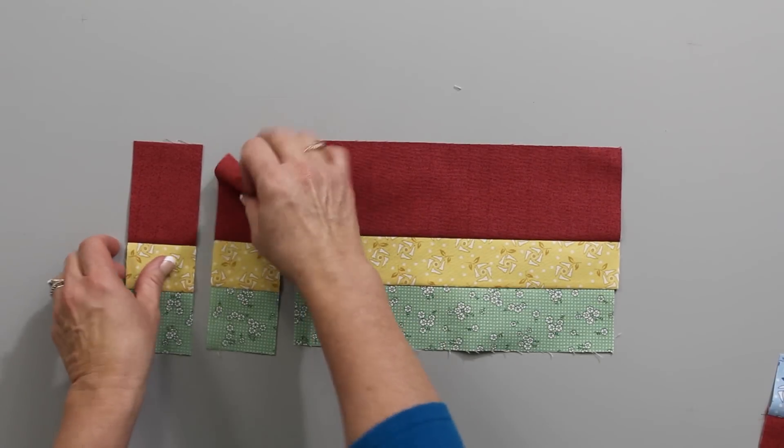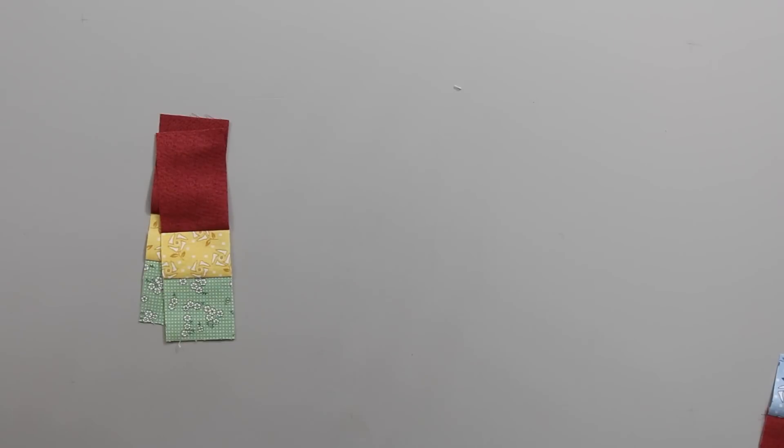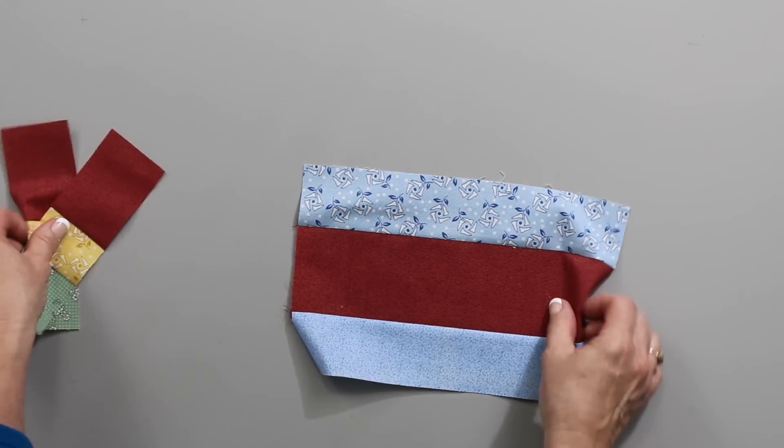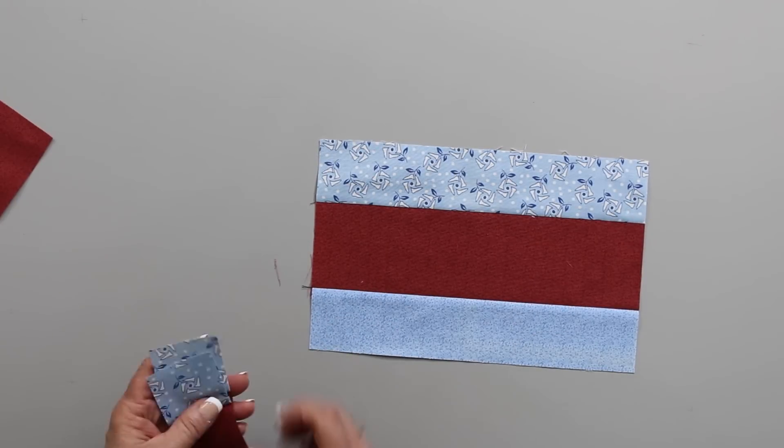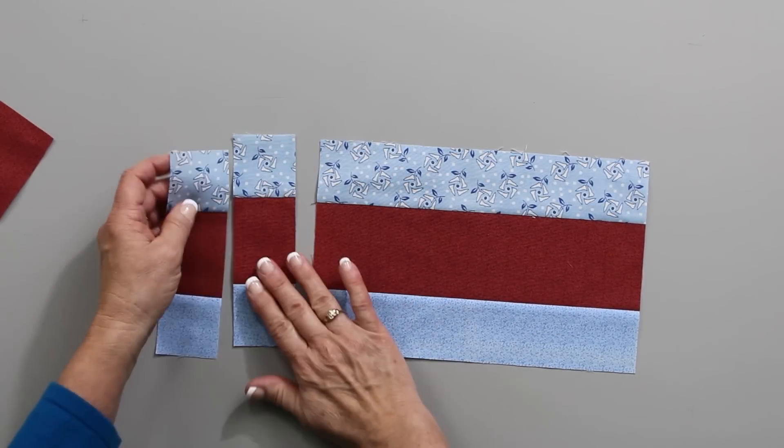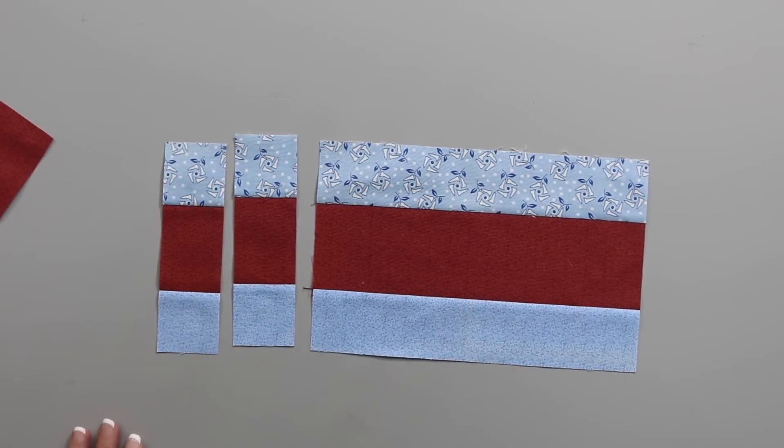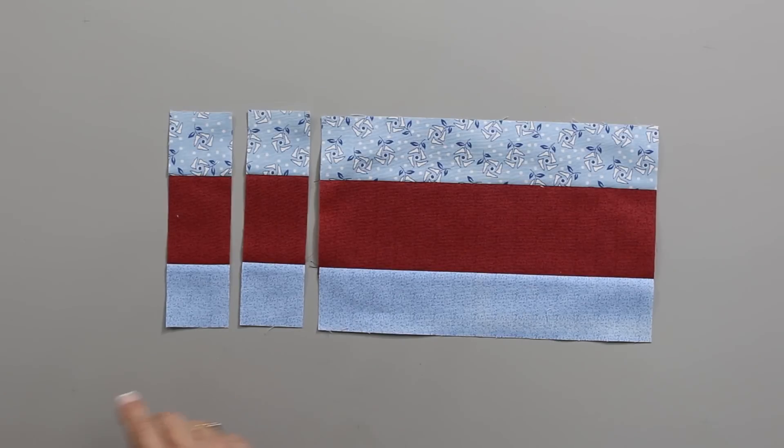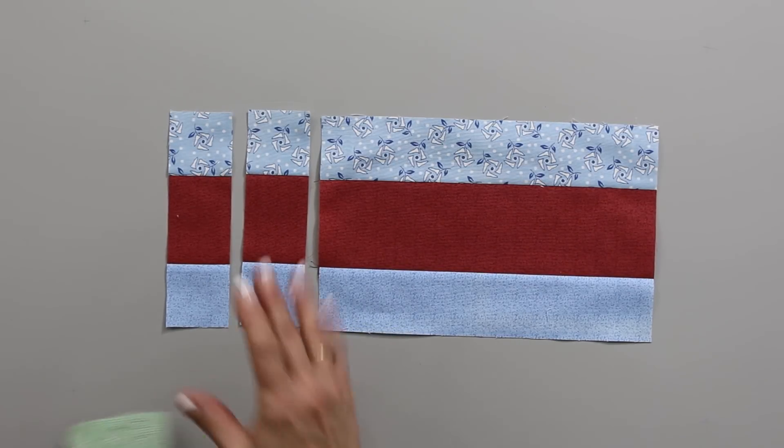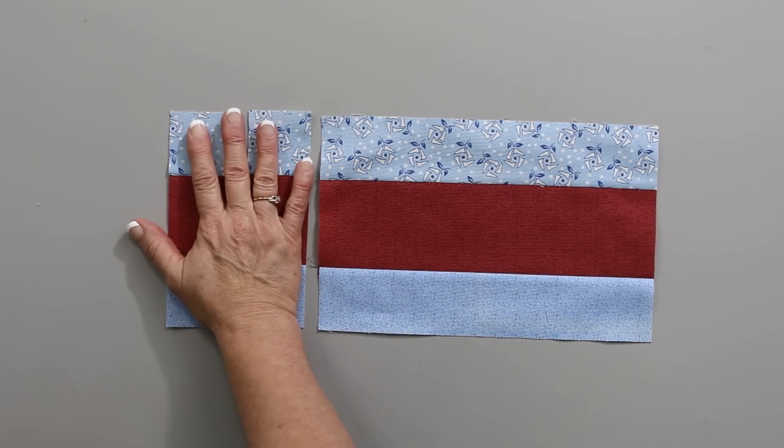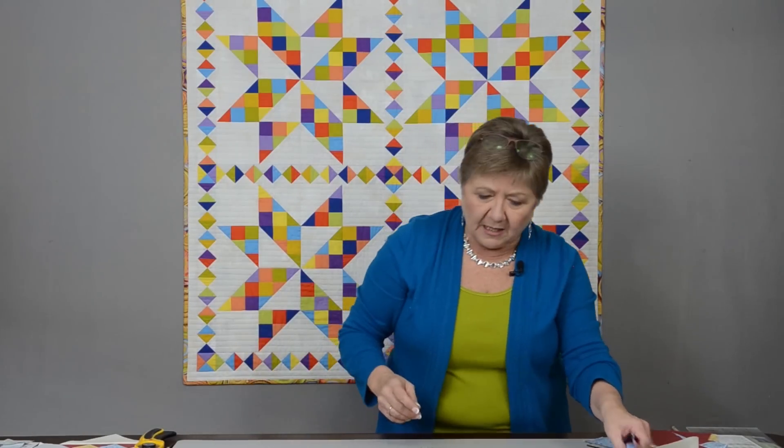When I work with strip set two, my sub cuts that I make across that strip set are going to be the same size as the strip number two that's listed on the chart. For the four and a half inch unit we're making, that's a two inch increment. So the sub cuts from strip one are one size, these are a different size. Pay attention here. That's the first time I did this. This is where I made my mistake.